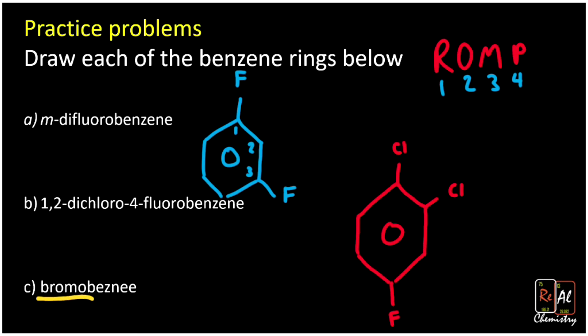And lastly, the easy one — bromobenzene. We draw the benzene ring with the circle, attach a bromine, and we're done. So that's naming benzene rings using ortho, meta, para or just the substituent numbers.